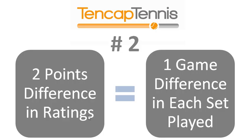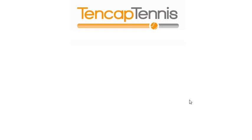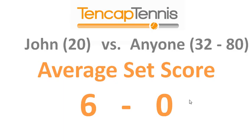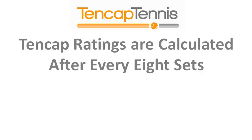To explain what 'out of range' means, let's go back to the two-points-equals-one-game scenario. If there is a 10-point difference between you and your opponent, the average score would be 6-1. If it is 12 or more points difference, the average score is 6-0, so no rating adjustment can be made. Therefore, scores between players with more than 10 points difference in ratings are not used in rating calculations.